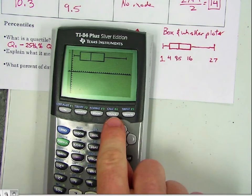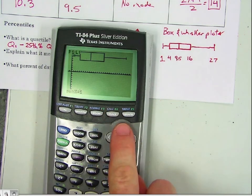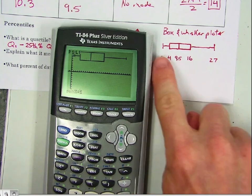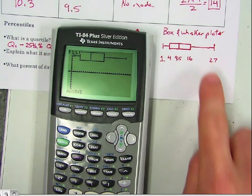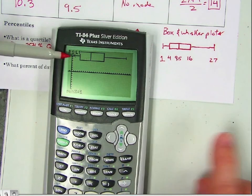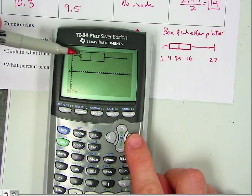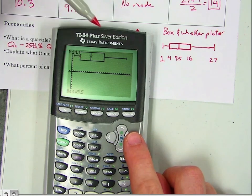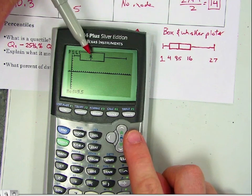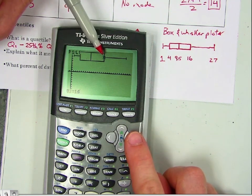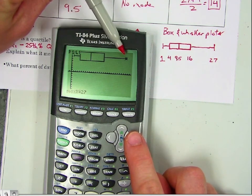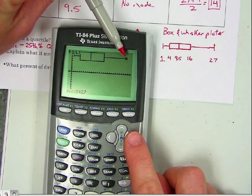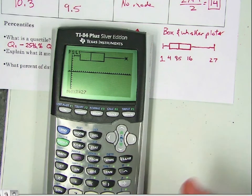Now if you hit trace, it will trace out exactly what we just drew. So you can see over here, the min x is 1, the quartile 1 is 4, the median is 9.5, quartile 3 is 16, and the max x is 27.